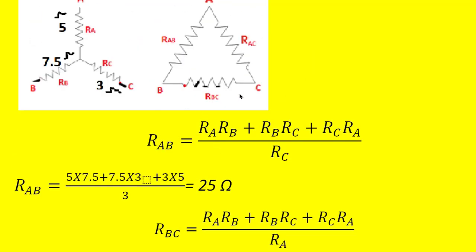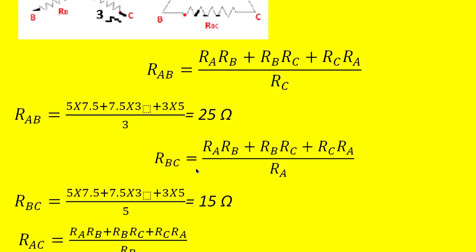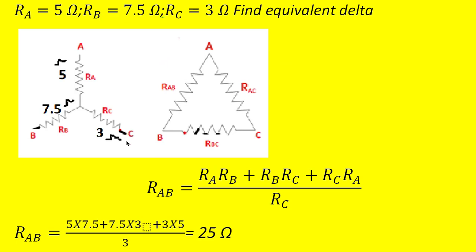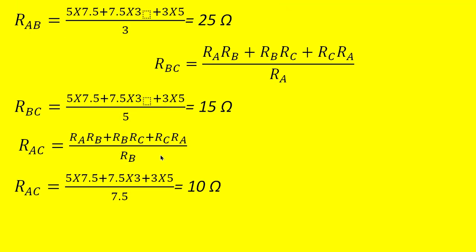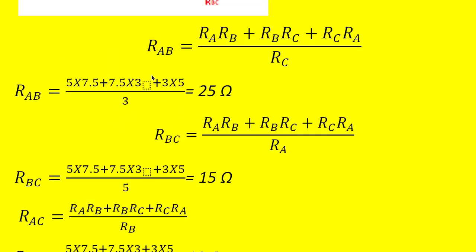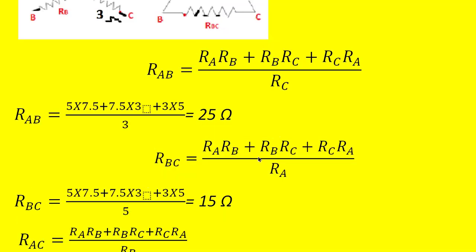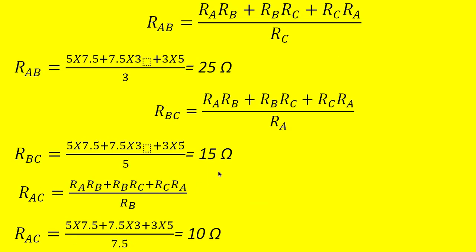Similarly, to calculate Rbc in the equivalent delta, we use the same numerator but divide by the resistance not connected to the B and C terminals, which is Ra = 5 Ω. So Rbc = (Ra·Rb + Rb·Rc + Rc·Ra) / Ra = 75 / 5 = 15 Ω.